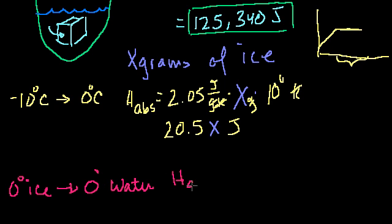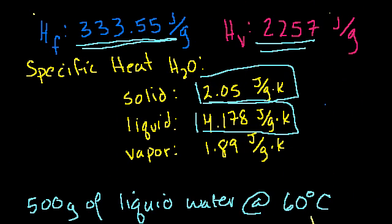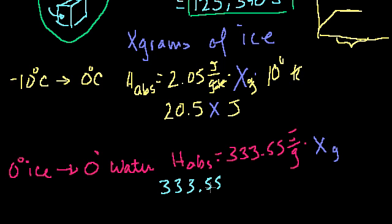Well, the heat absorbed now is going to be the heat of fusion of ice, or the melting heat. That's 333 joules per gram. It's equal to 333.55 joules per gram times the number of grams you have, x grams. So the ice will absorb 333.55x joules as it goes from 0 degree ice to 0 degree water.